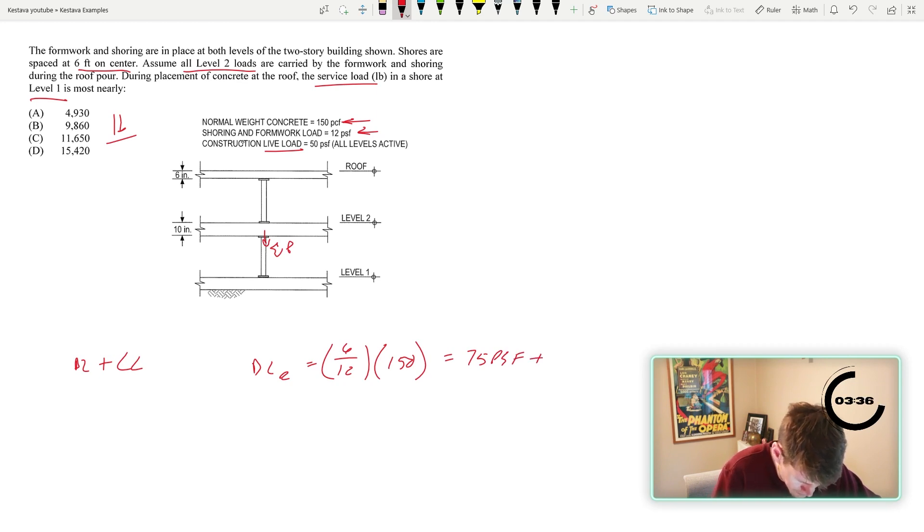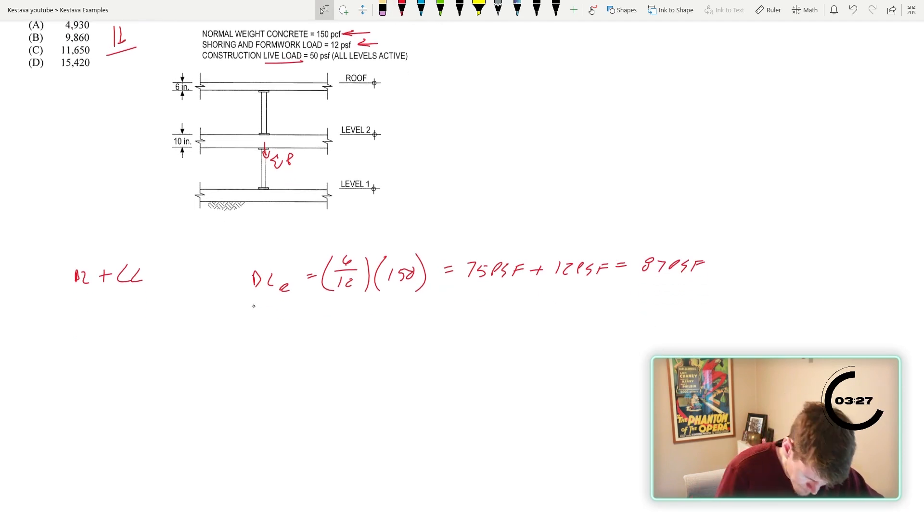That's dead load of the roof. That's one half. So that's 75 PSF. And then we have shoring another 12 PSF gets you 85, 87 PSF. Sorry if I went off a little bit. Okay. So that's dead load of roof, dead load. Second is 10. Okay. So it's different.